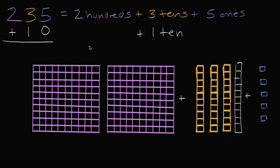So what does that leave us with? Well, if I had three tens and I have one more 10 now, now I'm going to have four tens. Let me do that in that yellow color. So now I'm going to have four tens.